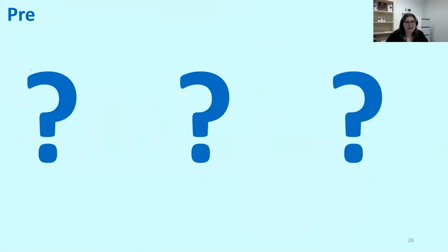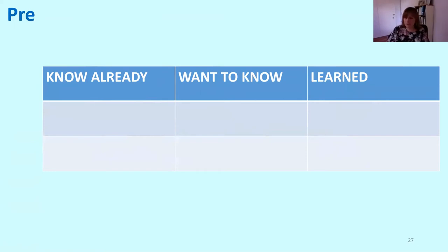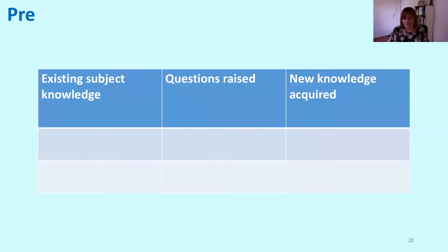Another strategy: after looking at the heading and keywords, get students in pairs to write down three questions they want answered from the text — this creates an incentive for reading on. This is the 'want to know' stage of the KWL table used for reading in schools. The table covers three stages: 'know already' (pre-stage predicting), 'want to know' (what to learn from the text), and 'learnt' (post-stage). If students have used it at school, you can change the language around it to avoid seeming too basic — same principle, different framing.